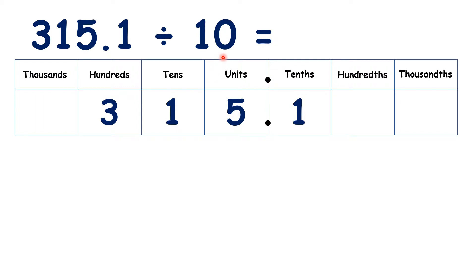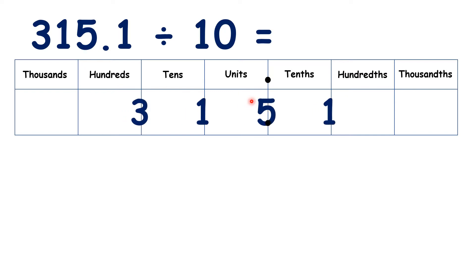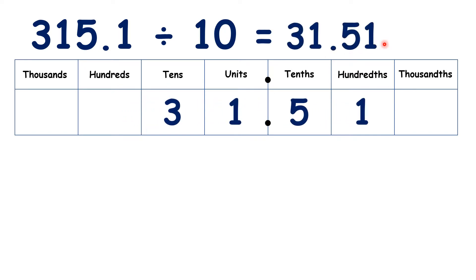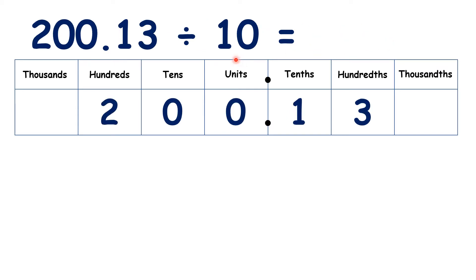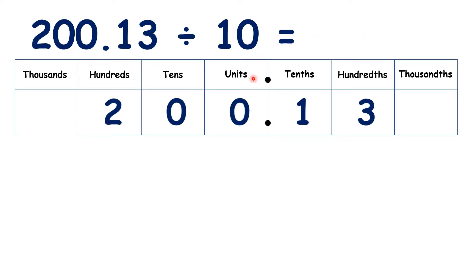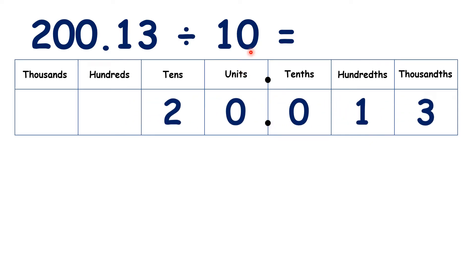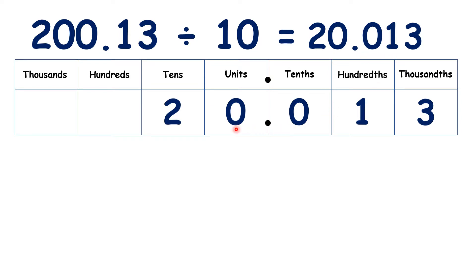For 315.1 divided by 10, we move the digits and we have 31.51. And for 200.13 divided by 10, we move the digits one place, so we have 20.013. Again, it's important that we keep the 0s, because they're not on the end.